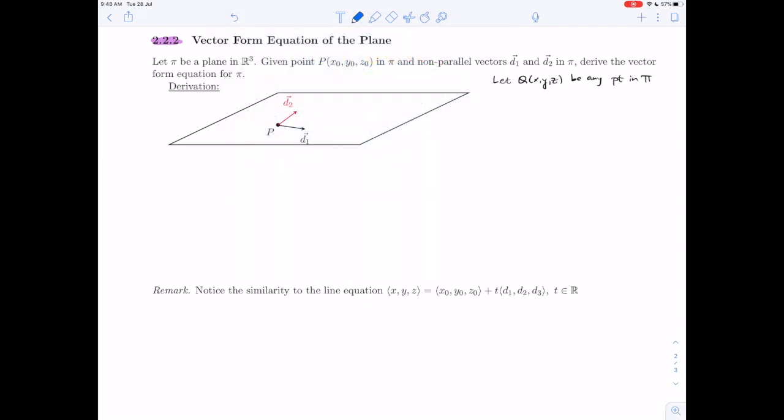Now in the previous derivation with the normal vector in the general form, we relied on vector pq in the plane being perpendicular to a normal vector. We are going to do something different here. We have two vectors that are in the plane now, or parallel to the plane, not perpendicular to it.